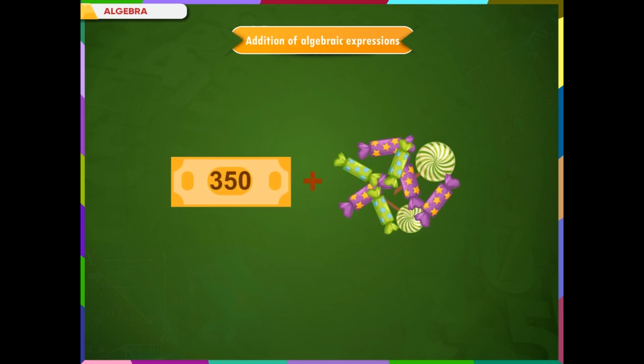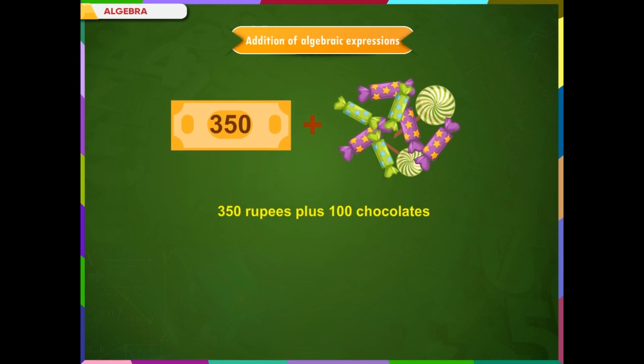Let's say they have 350 rupees and 100 chocolates. Can they add both these quantities? No, they cannot, as rupees and chocolates are not alike. We can write the total as 350 rupees + 100 chocolates. If x stands for rupees and y stands for chocolates, this becomes 350x + 100y.